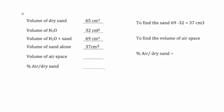Now, we know that the volume of our dry sand is actually a mixture of dry sand with airspaces between it. And if we know the sand, then we can calculate the airspaces. We're going to take 65 and subtract 37 from it, and we'll get 28 cubic centimeters.